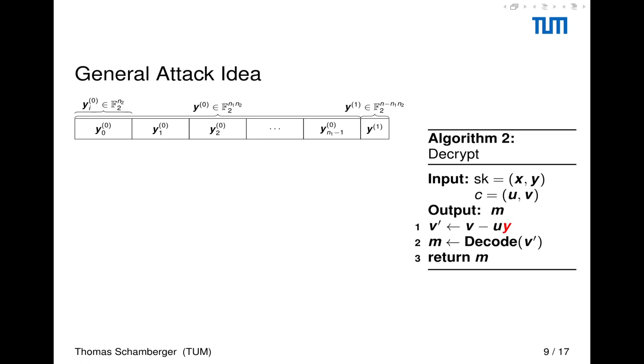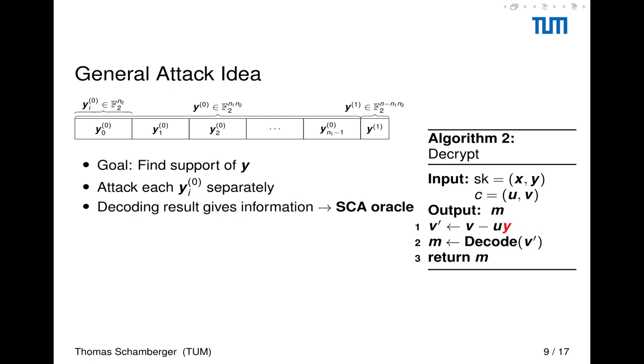Let me introduce you to the general attack idea. So we are interested in Y. I showed you how Y looks like. And if you think about setting U to 1, we can see that if Y is a codeword of the combined code, Y acts as an error on this codeword. And then we decode this. So our goal is to find the support of Y. We only need the support because it is very sparse. And we are going to attack each of the Reed-Muller blocks in this Y here, in this Y0 here separately. And we assume that the decoding results of one of these Reed-Muller blocks gives us information useful for the attack.